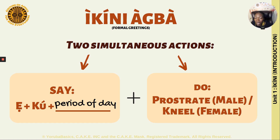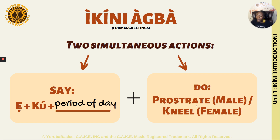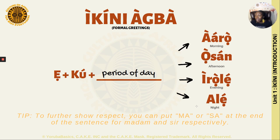KU — sometimes people ask if that's the same as 'good.' Not necessarily; sometimes it translates to that, but that's not the actual translation. As for what you would do: if you are male, you would prostrate, and if you are female, you would kneel. The times of day you can use are: ARO for morning, OSON for afternoon, EROLE for evening, and ALE for night.